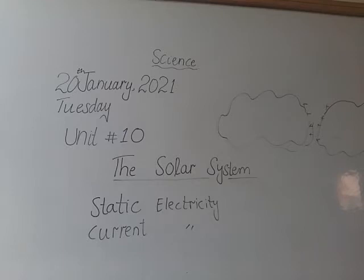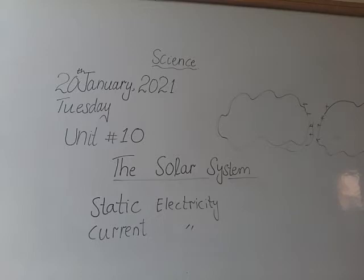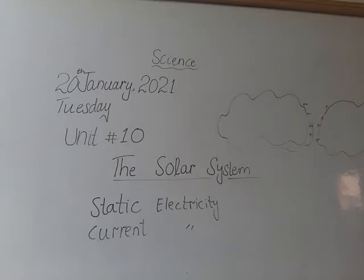Another example: when you're wearing warm clothes and they rub against your body, when you take them off you see a spark and hear a sound. Also, when you place your hand over a TV screen, you feel a charge produced by static electricity. Current electricity is the type where current flows from one place to another — the electricity we use at home, flowing from the switchboard to our electrical appliances, is the best example.